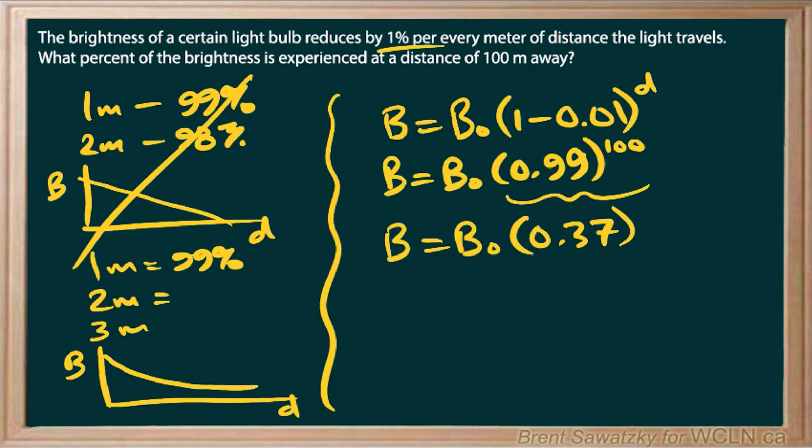So what we're saying here is if we took the original brightness and multiplied it by 0.37, or 37% of the original brightness, we would get the brightness at 100 meters. So we can recognize that as 37%.